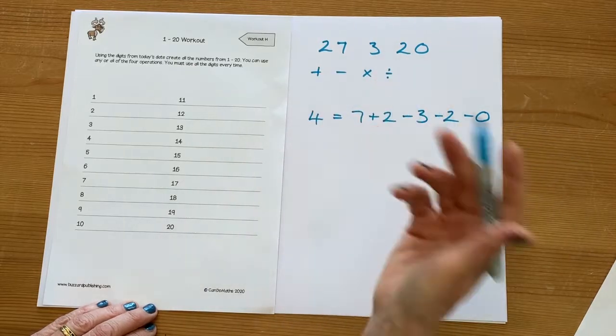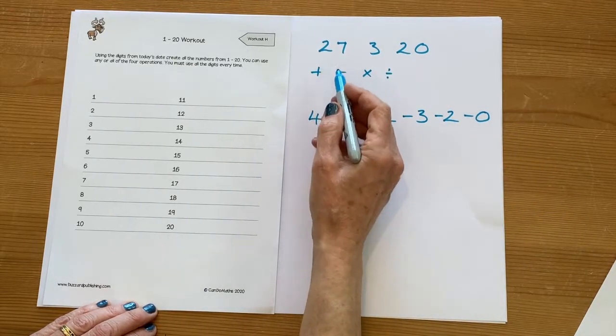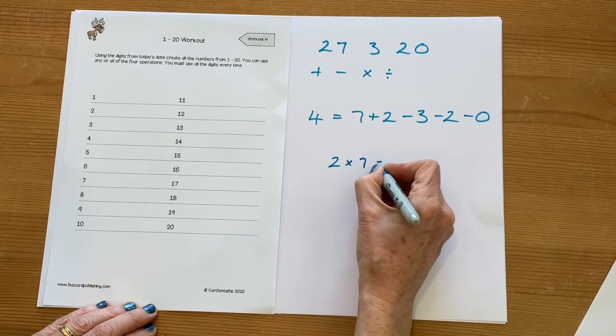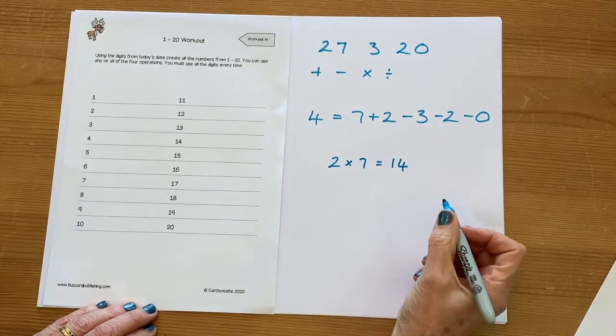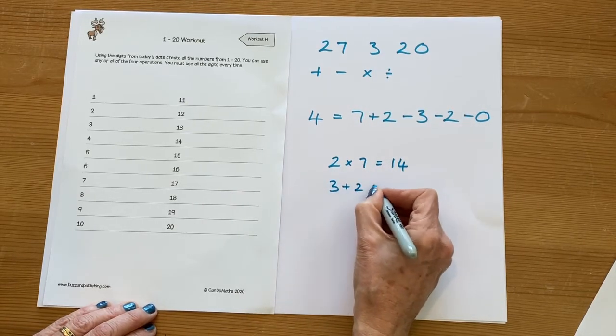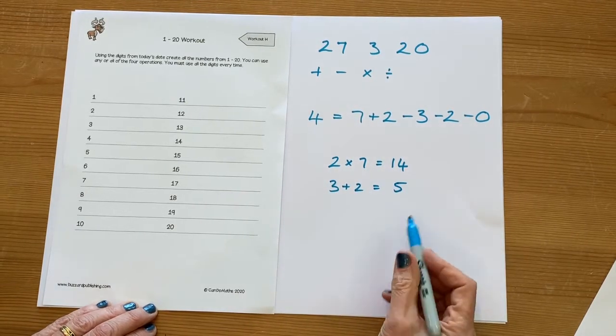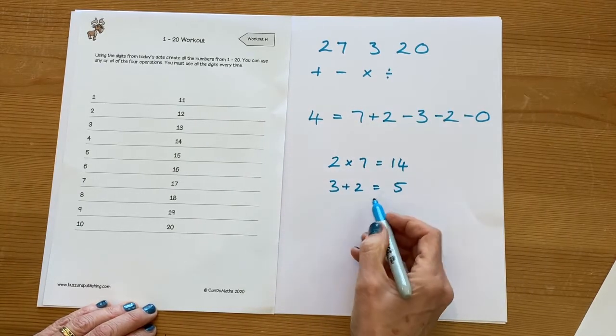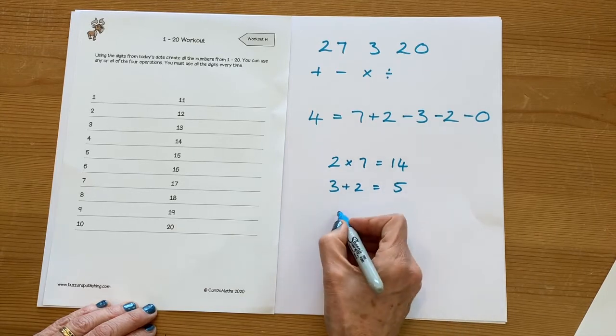So for example, if I did two multiplied by seven, I get fourteen. If I do three add two, I get five.